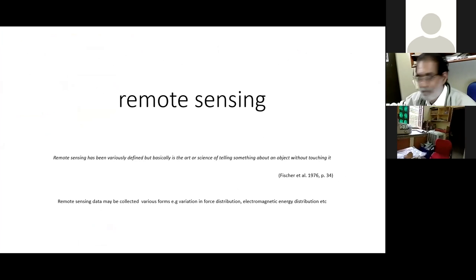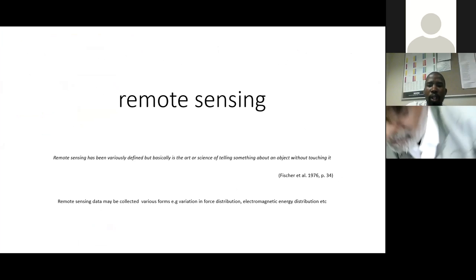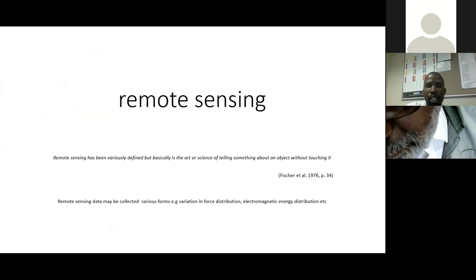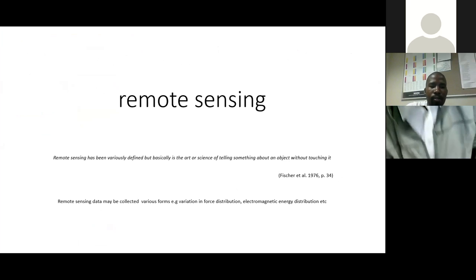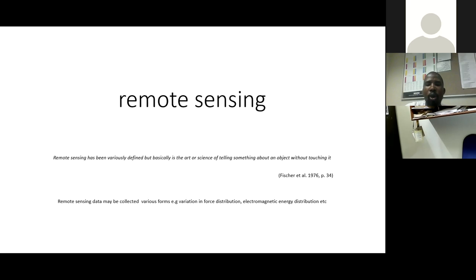Remote sensing is basically the art of being able to get information about something without being in touch with it. There are several forms of remote sensing being used, some of them being the variation in force distribution — an example being a force of gravity, which is measured using a gravity meter. And then we have the electromagnetic energy distribution, which is the most common form used in remote sensing. My presentation will be focused around the electromagnetic form of remote sensing.